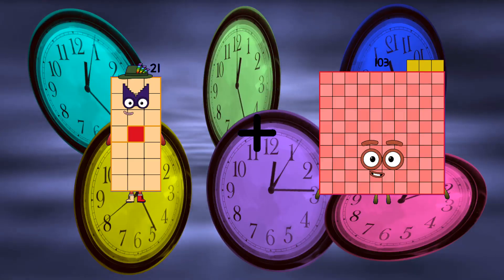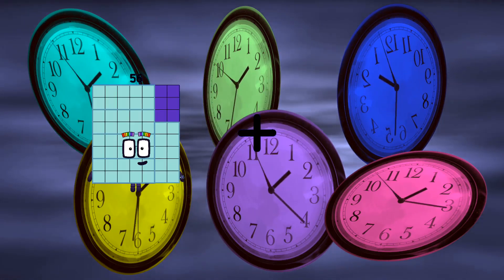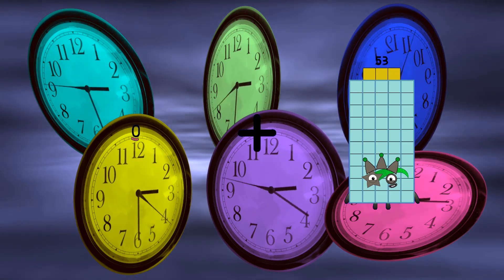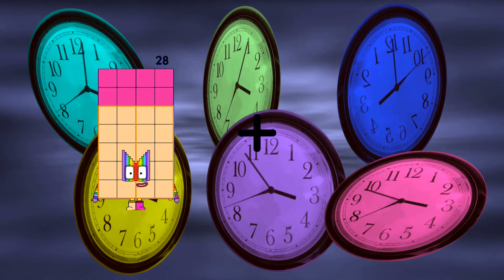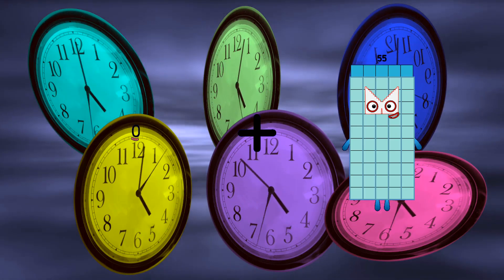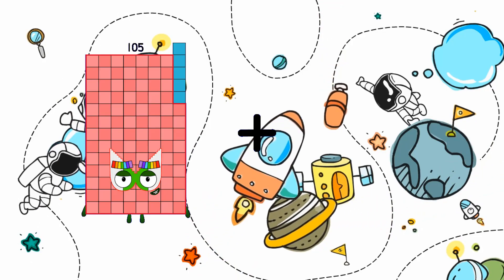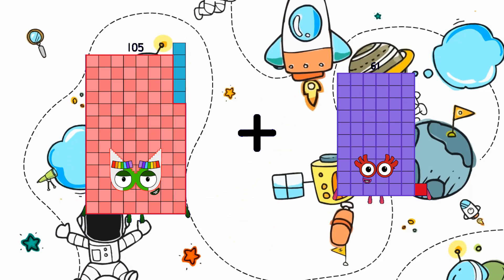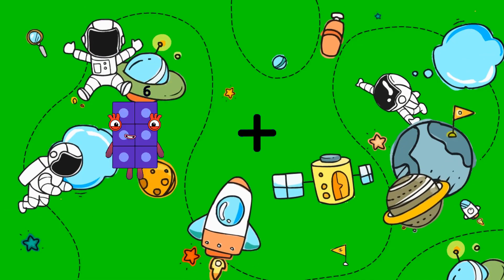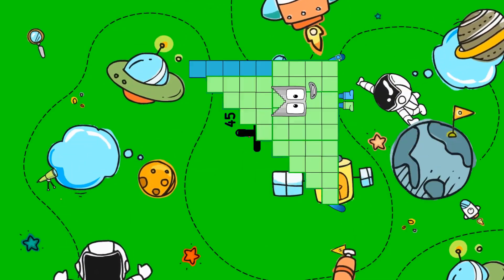21 plus 78 equals 99. 0 plus 53 equals 53. 0 plus 55 equals 55. 105 plus 61 equals 166. 0 plus 45 equals 45.